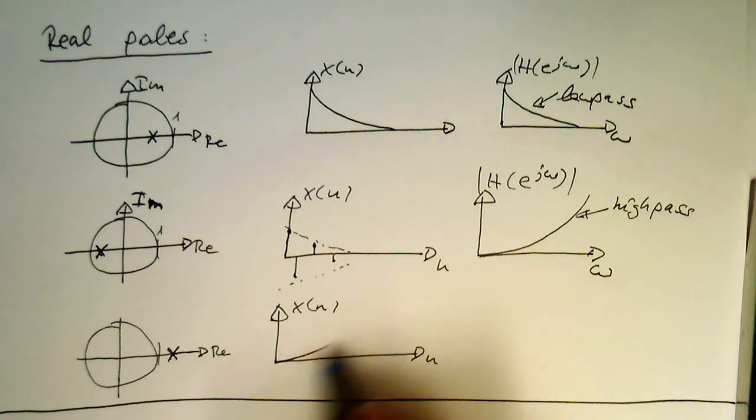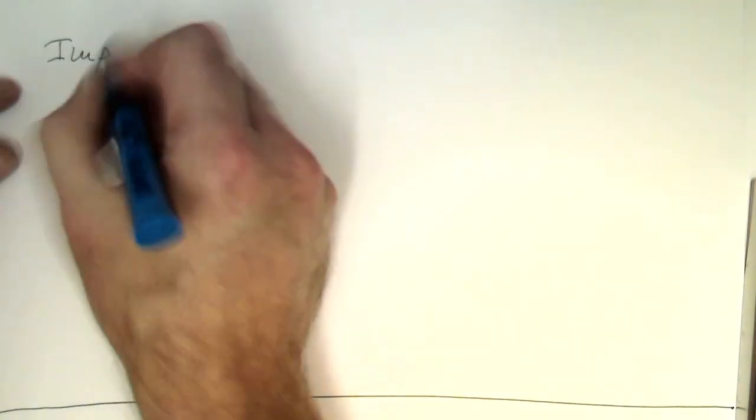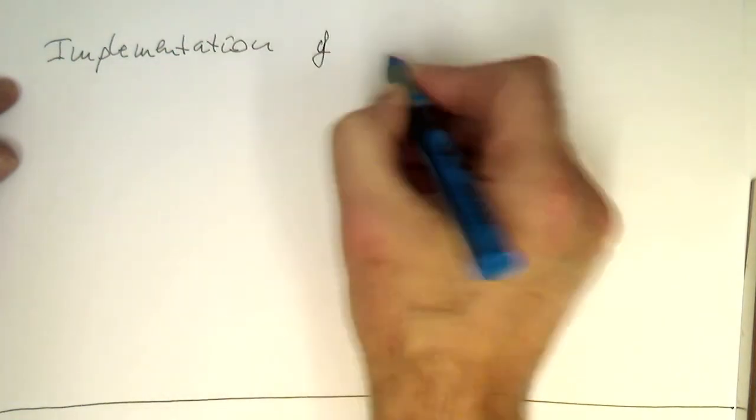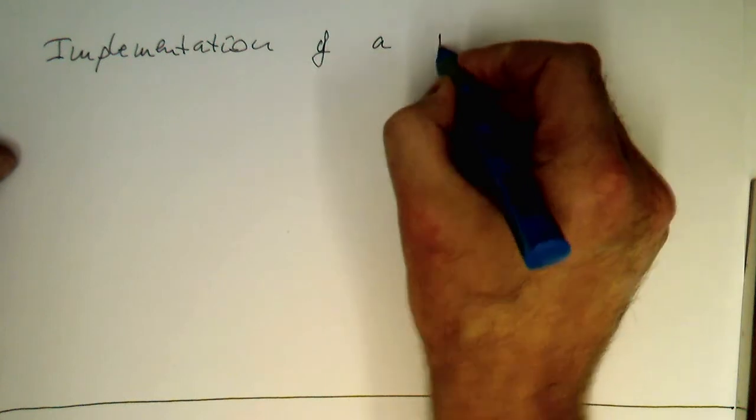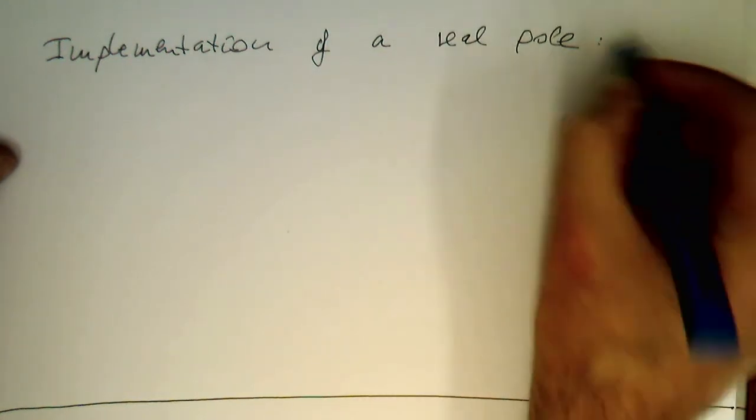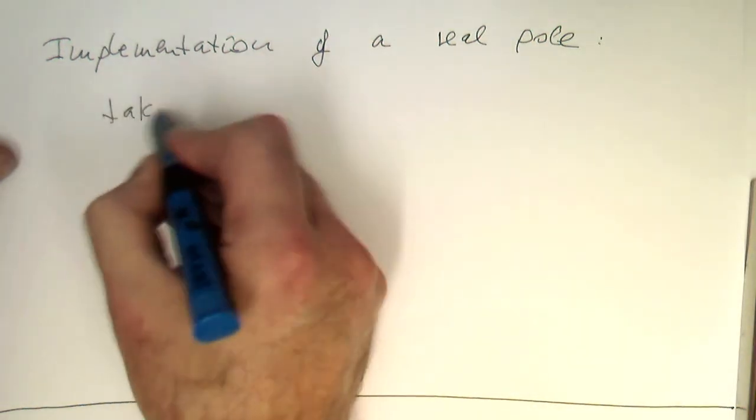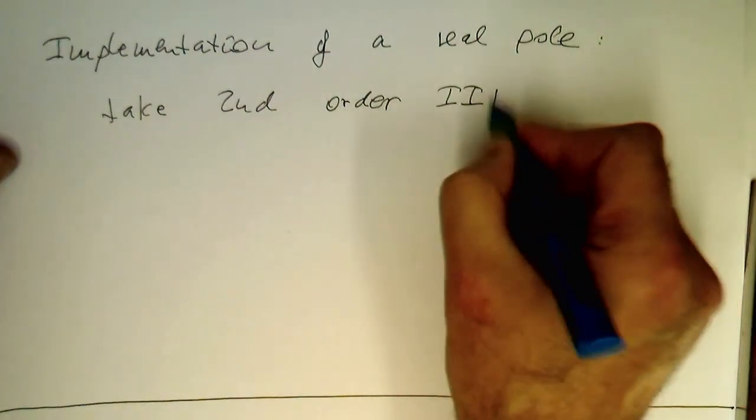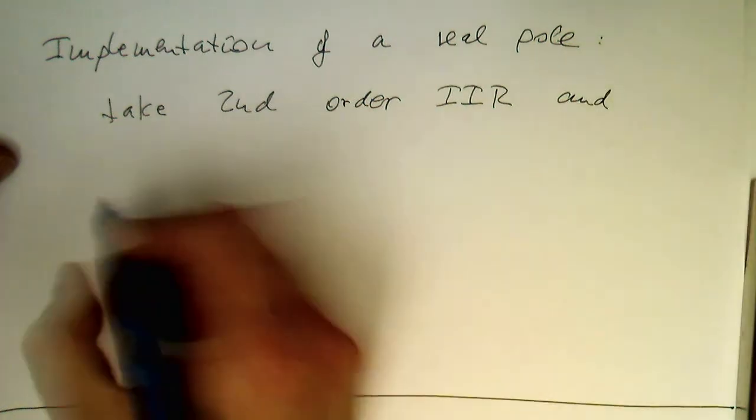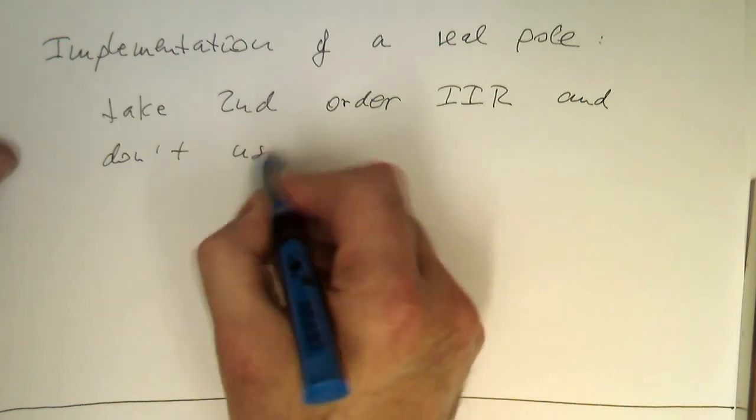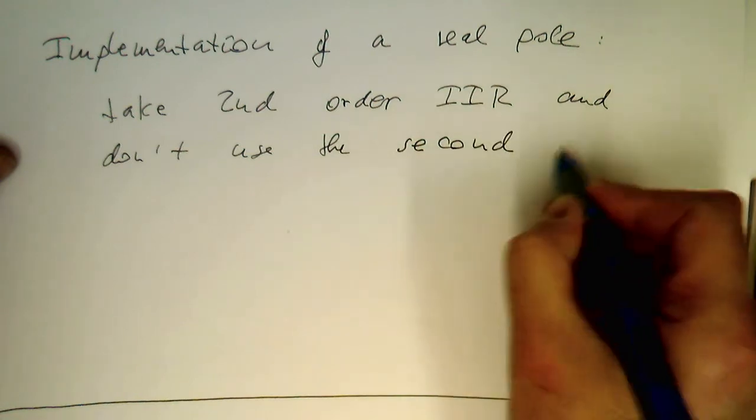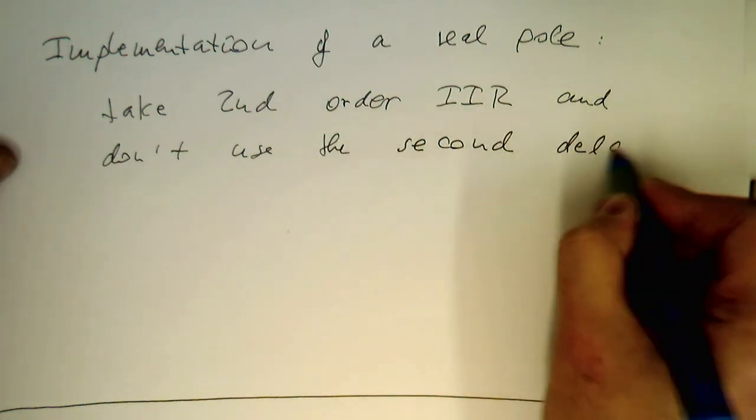So usually the implementation of a real pole is usually just take a second-order IIR, and don't use the second delay line.